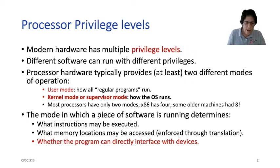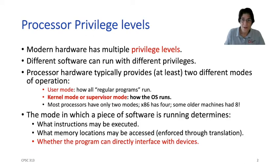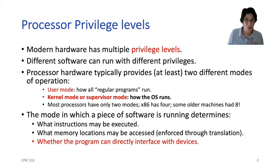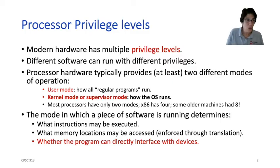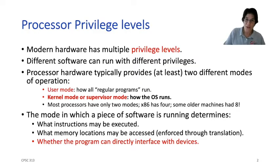So why might you want operating systems to have more power than regular programs? The answer is that there are some things you wouldn't want regular programs to do — like halt the processor. Imagine that we were all sharing the student machines and someone could write a program that said halt the processor.